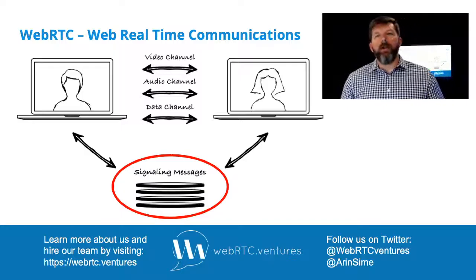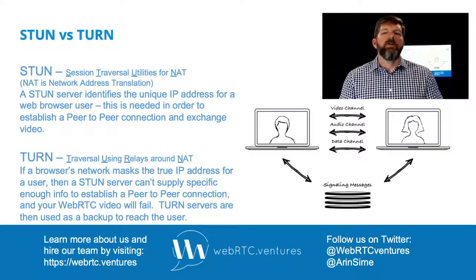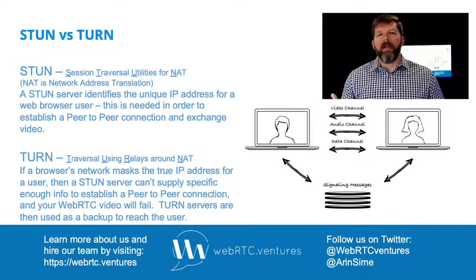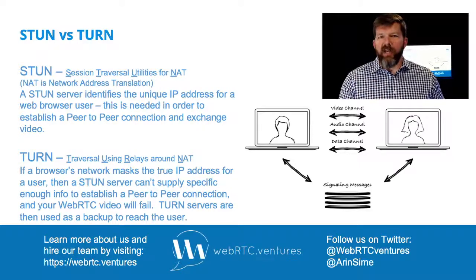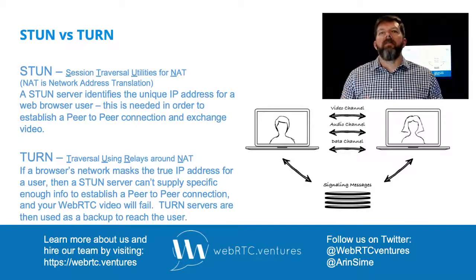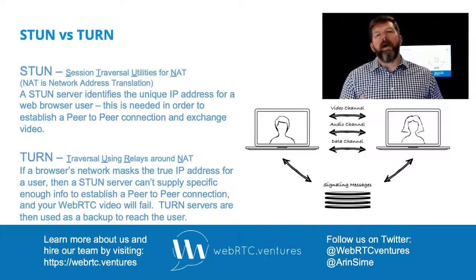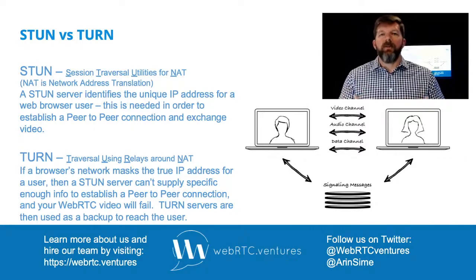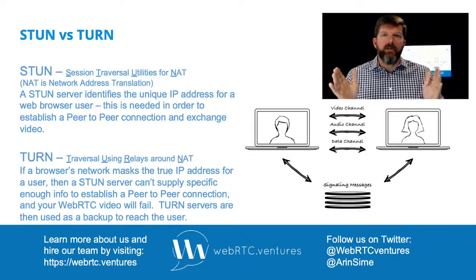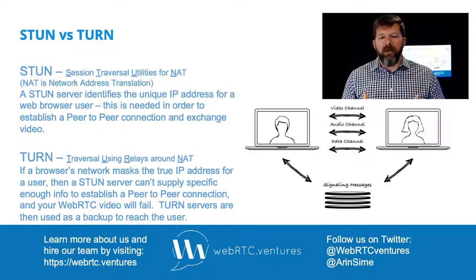STUN is what you're going to use most of the time. What the STUN server does is, for each browser and each party in that WebRTC connection, help you know what IP address to connect to them. Because if we're going to have a peer-to-peer connection directly between two parties, we have to have a unique identifier — that's the IP address. In the vast majority of your WebRTC calls, a STUN server is going to identify the unique IP address for each of those individual users and use that to establish the peer-to-peer connection.